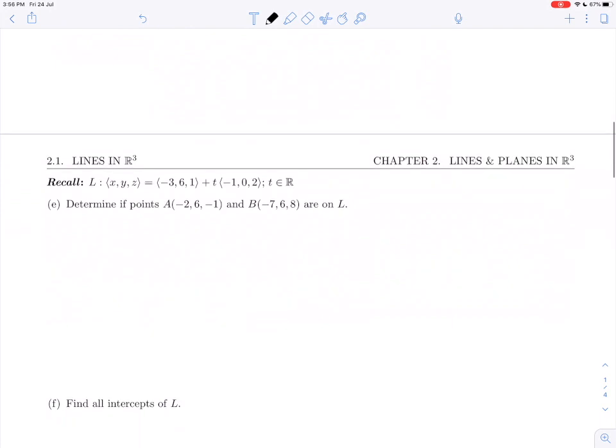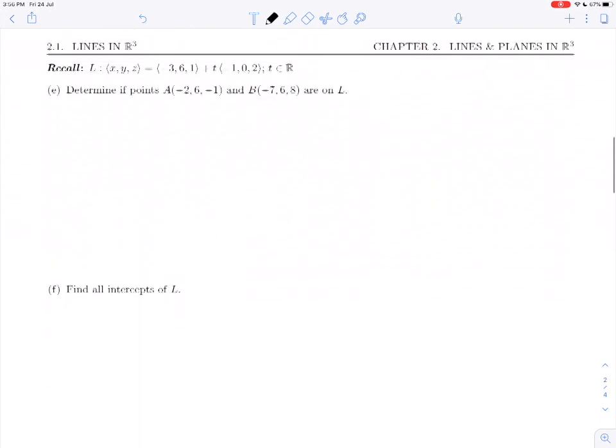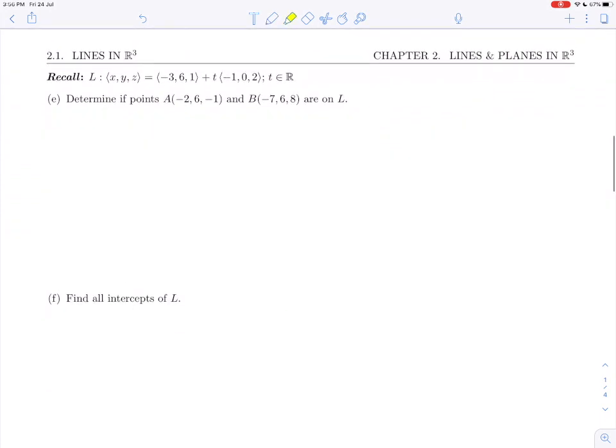Let's go on to the next. Now we are given two more points, points A and B, and we're asked to determine if they are on L. The A and B are the x, y, and z values, so we're going to be checking whether they fit in this equation. It's easiest if we rewrite our equation for L in parametric form: x = -3 - t, y = 6, and z = 1 + 2t. Then we plug in the x, y, and z for A and B.